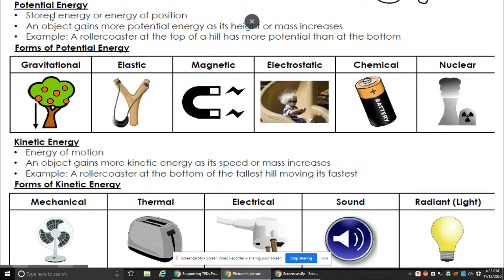Potential energy. Potential energy is stored energy or energy of position. An object gains more potential energy as the height or mass increases. Example: a roller coaster at the top of a hill has more potential than at the bottom.